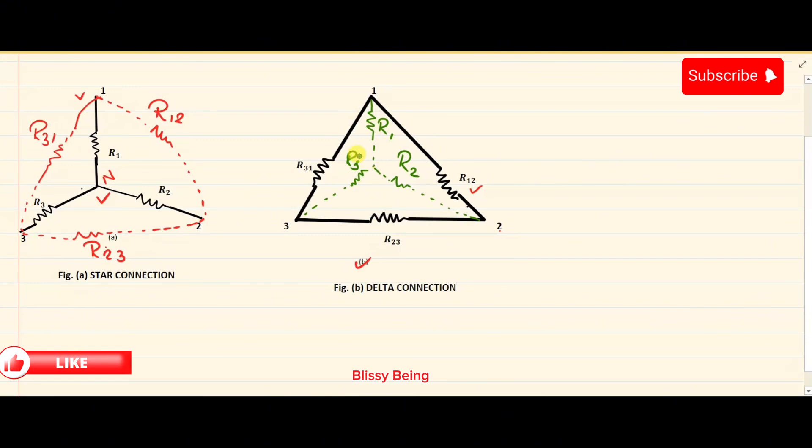Now our remaining task is to identify the value of R1, R2, R3 in delta to star connection, and the value of R12, R23, R31 in star to delta connection. In order to find these values, you are already provided with certain formulas.